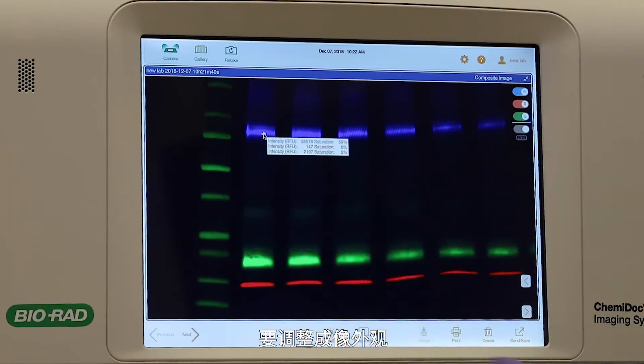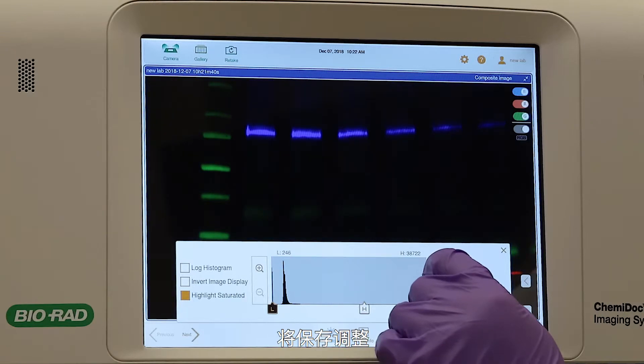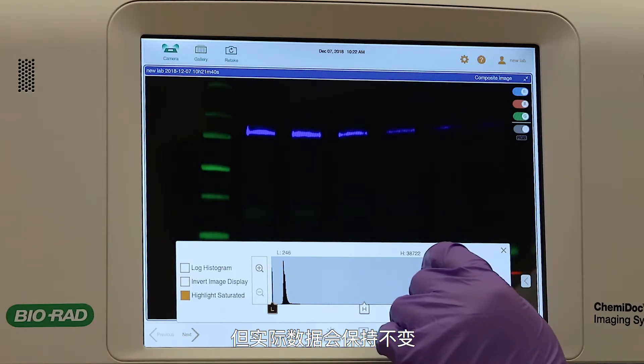To adjust image appearance, tap the Transform icon in the lower toolbar. Adjustments will be saved, but the actual data will remain unchanged.